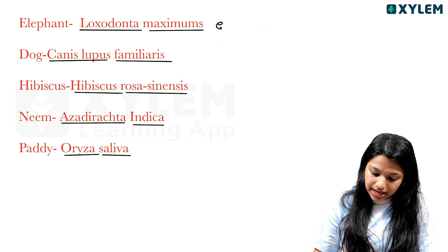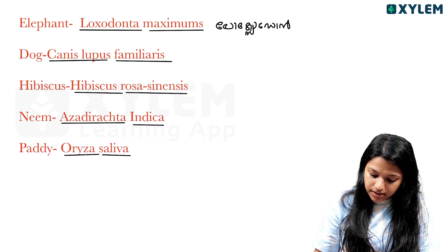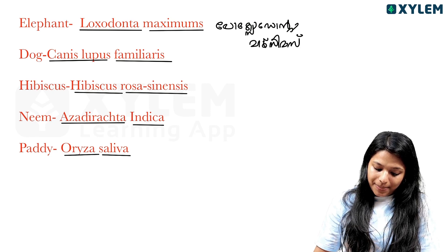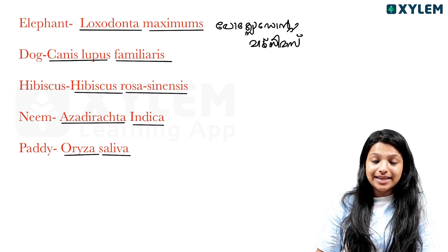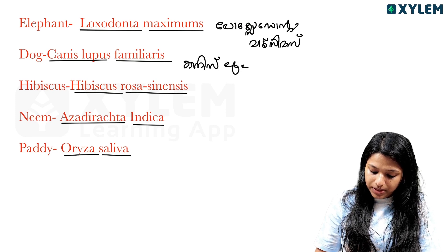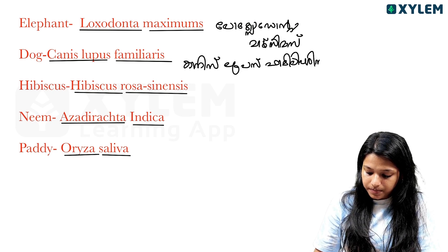The scientific name Loxodonta maximus. Canis lupus familiaris — Canis lupus familiaris.